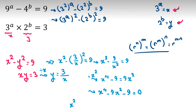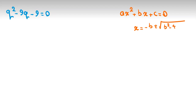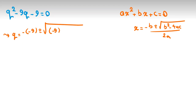Now I let Q equal X squared, so the equation becomes Q squared minus 9Q minus 9 equals 0. Using the quadratic formula — if AX squared plus BX plus C equals 0 then X equals negative B plus or minus square root of B squared minus 4AC, all over 2A — here Q equals negative (−9) plus or minus square root of (−9) squared minus 4 times 1 times (−9), all over 2 times 1.